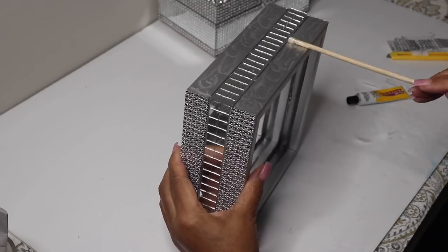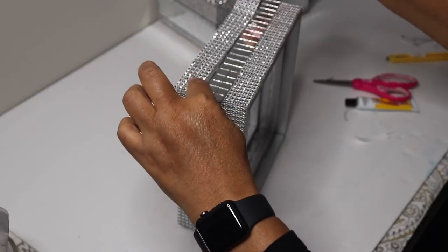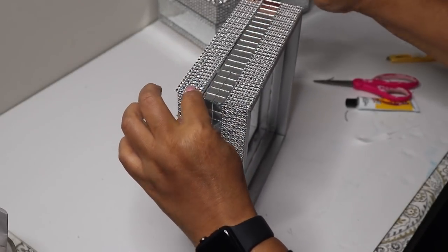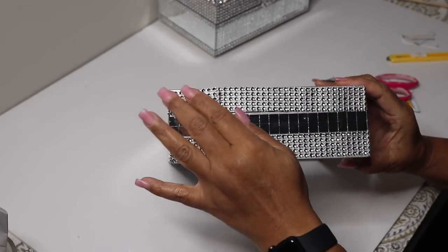Here, I sprayed some of the Dollar Tree fix-all on and then glued the bling on top of it. Again, I decorated each side the same way.